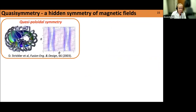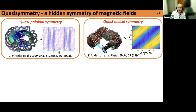We call this property quasi-symmetry. There are several different varieties. Quasi-poloidal symmetry has contours of the field strength that wrap around the torus poloidally — the QPS experiment developed at Oak Ridge illustrates this, where the torus shape is nowhere near symmetric but the magnetic field strength is nearly symmetric in this coordinate system. Quasi-helical symmetry has field strength contours wrapping around in a helical direction — this is visualized in the Helically Symmetric Experiment (HSX) at the University of Wisconsin, currently the only operating experiment testing the quasi-symmetry idea.